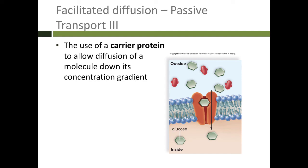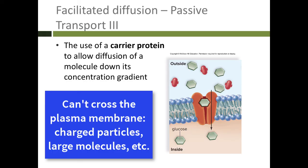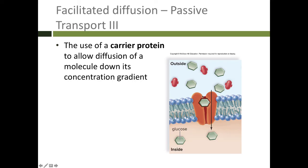Our third type of passive transport is facilitated diffusion. Remember that charged particles like ions — sodium or chloride — can't move through the hydrophobic environment inside the phospholipid bilayer. How do we get them across? We use something called a carrier protein, which acts like a tunnel. Here we're showing glucose moving across — glucose doesn't normally go through the plasma membrane, so we have a special protein to carry it across. We're still going down the concentration gradient, so it's still passive, but we're using a special tunnel to get through. That's called facilitated diffusion because we are helping it out.